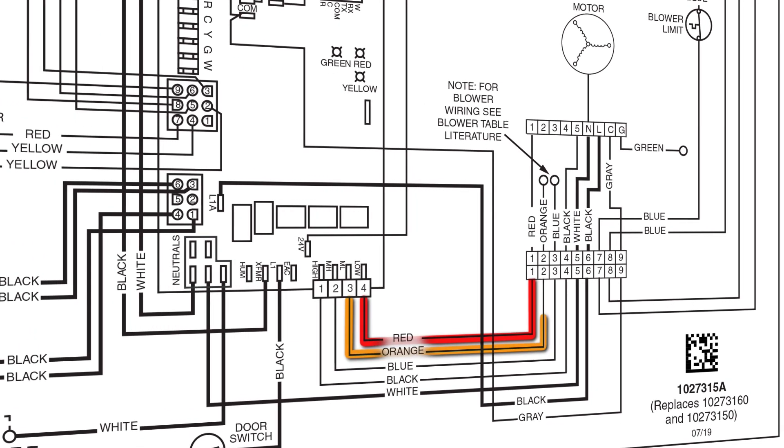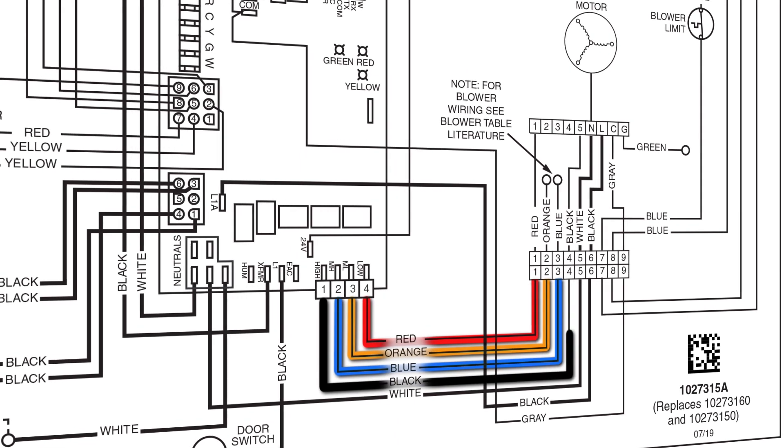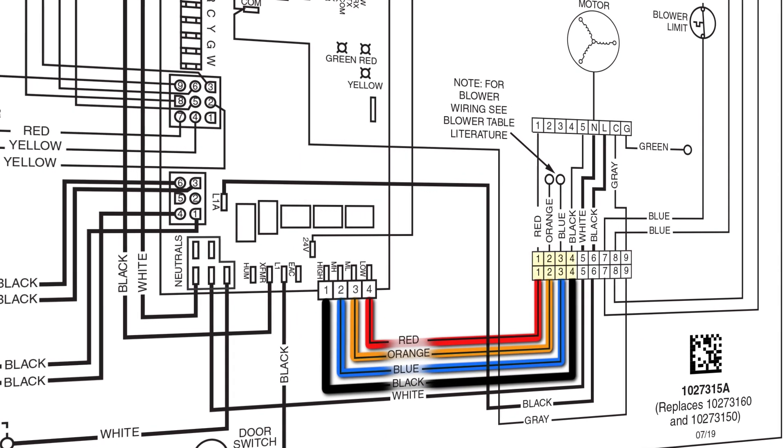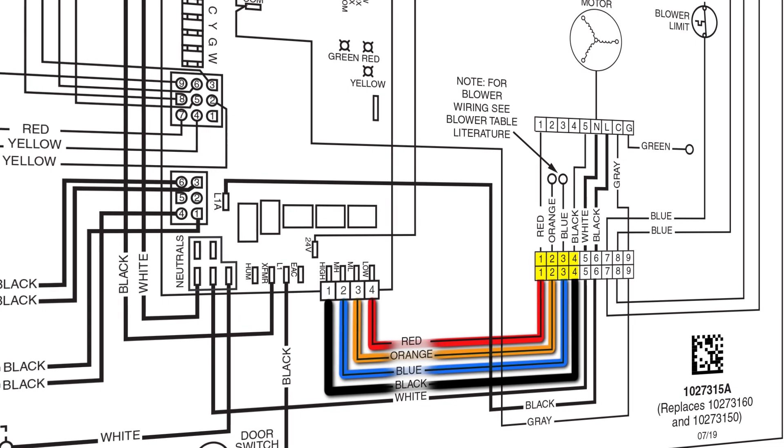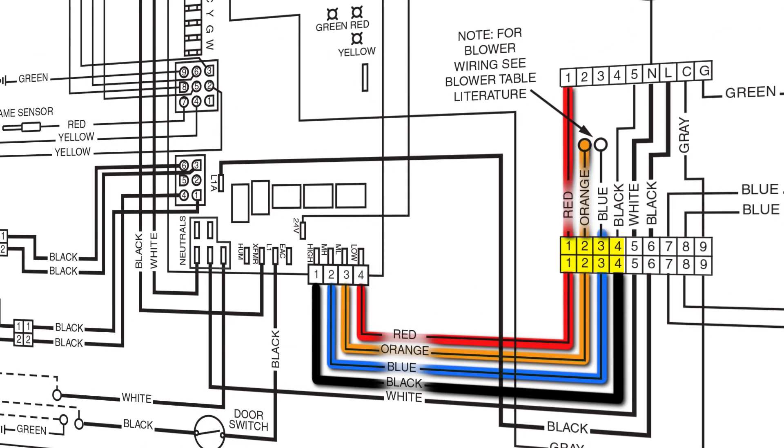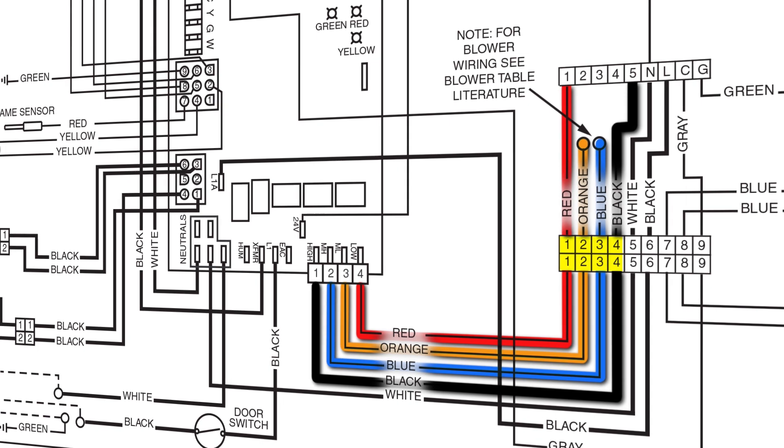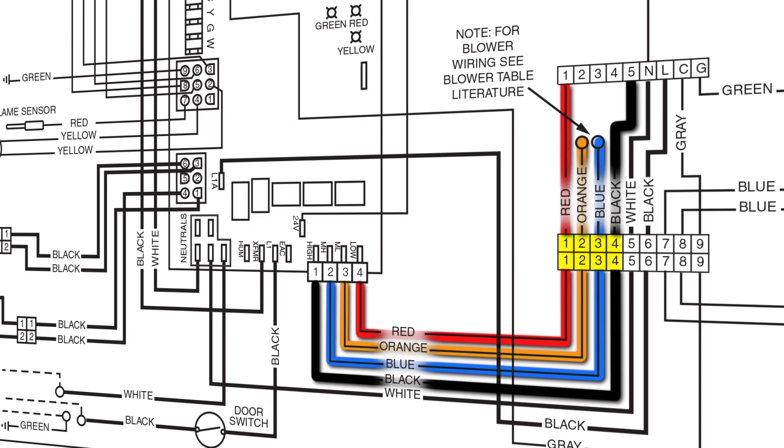So on the board side you'll have a red and orange, a blue and a black. That'll be on pins one, two, three, and four. Those colors will translate through the nine pin plug directly to the blower motor. Now on the blower motor on the wiring diagram you'll see you'll have pins one through five.